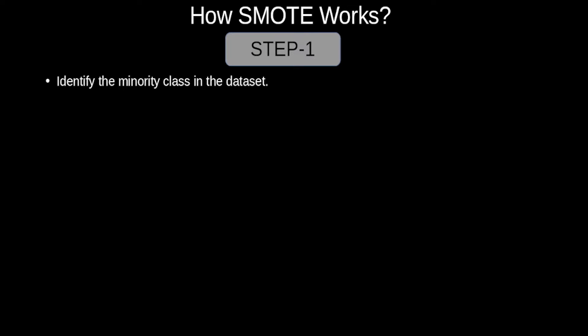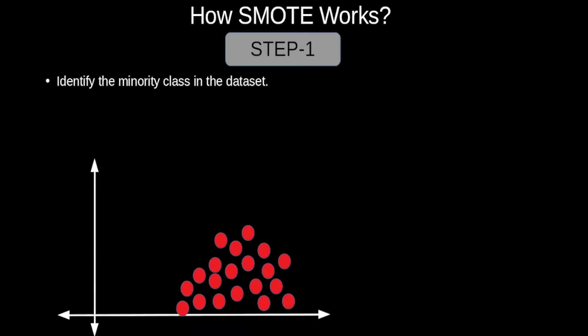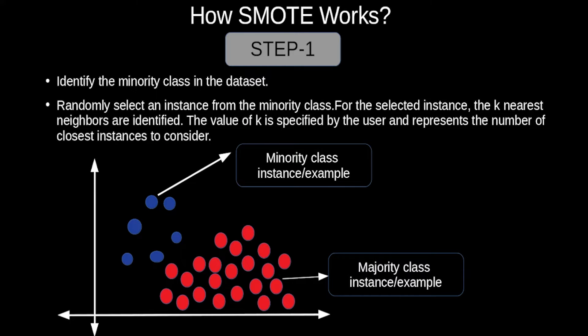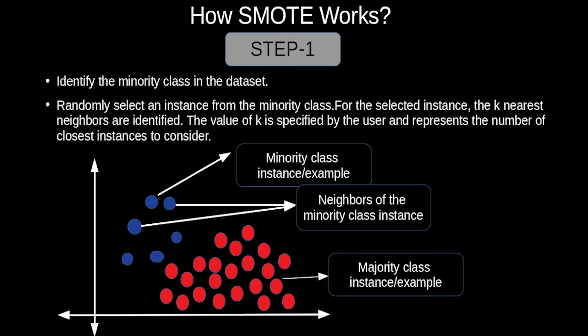How does SMOTE work mathematically to balance the dataset? In step 1, SMOTE identifies the minority class from the dataset. For example, red circles belong to the majority class and blue circles to the minority class. We then randomly select an instance from the minority class and identify its k-nearest neighbors, where k is specified by the user.